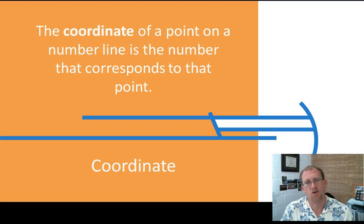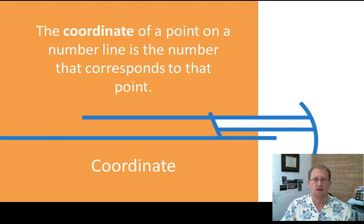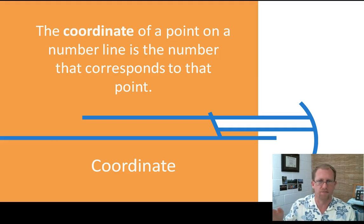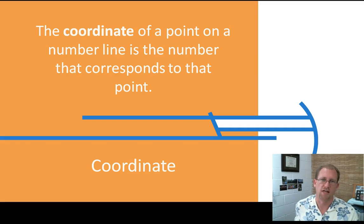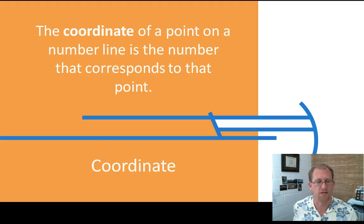A coordinate — a coordinate is a term we'll use, and it means the point on a number line that corresponds to a number. So if I say what's the coordinate of 6, you would find the sixth little hash mark on the line and say that's the coordinate of 6. There's another coordinate for 7, and you could have 6.5. We're just looking at the place on the line that corresponds to a particular number. That would be its coordinate.